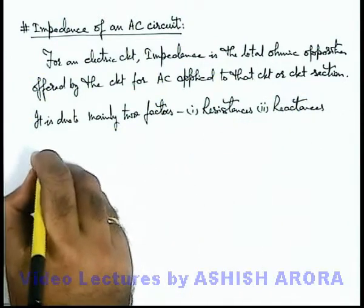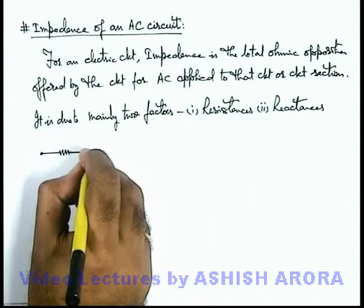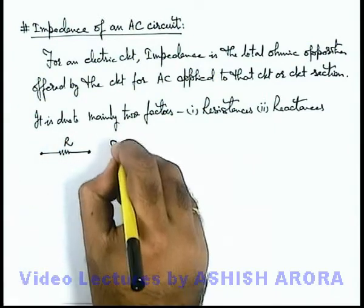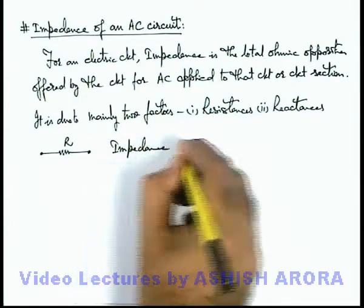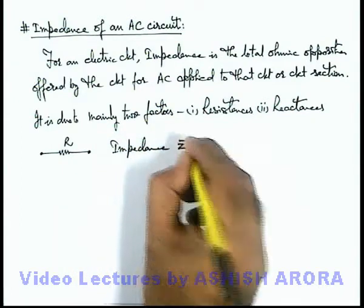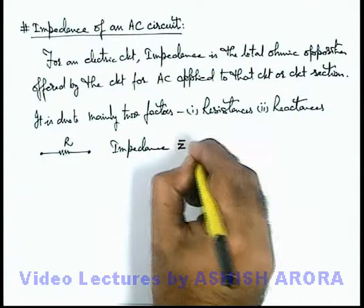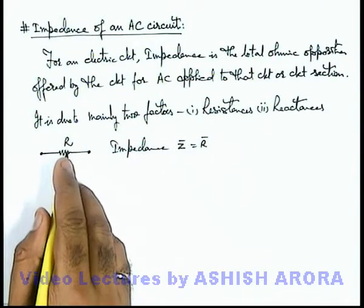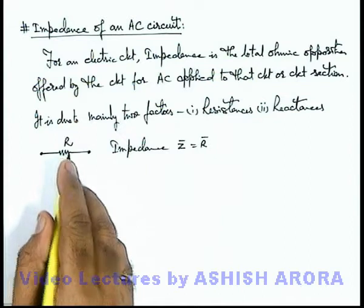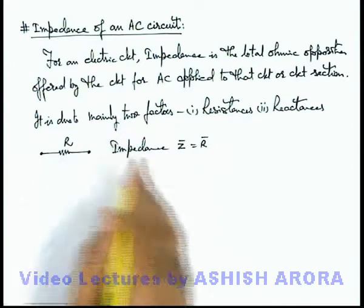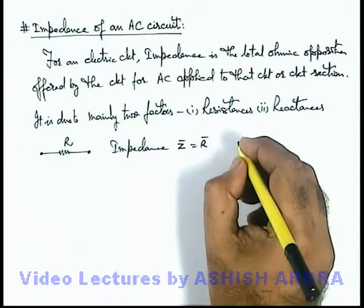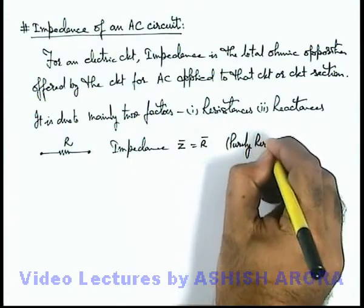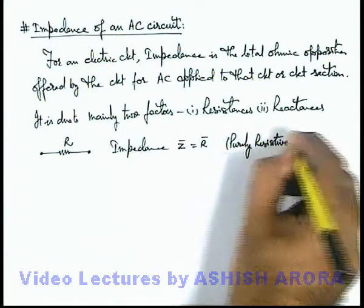If we talk about a pure resistance R connected in a circuit, its impedance, which is denoted by Z phasor, is written as only R phasor, because the ohmic opposition provided by R to any alternating current circuit is R only. So this is purely resistive impedance.